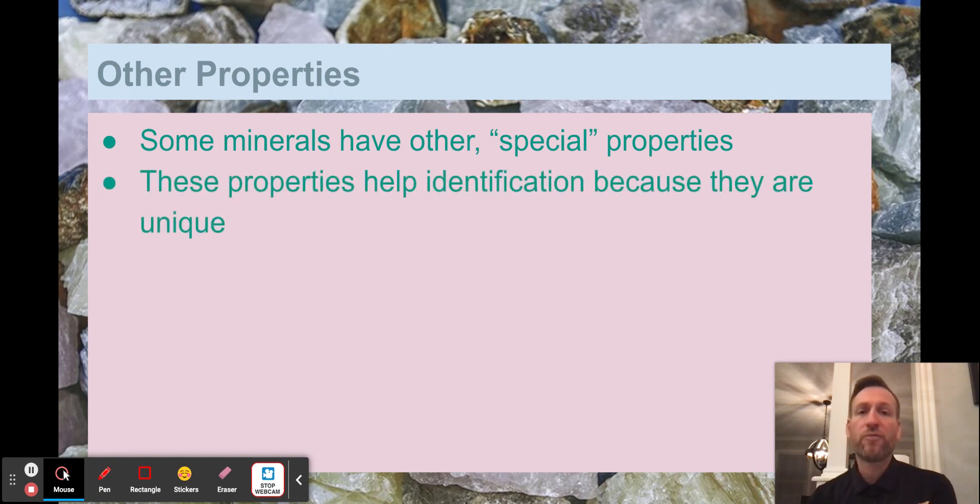All right. So some minerals, not all, but some have these other special properties like I was just mentioning. Properties are unique. And they really help in identification because of how unique they are. Not many of these minerals have these characteristics. And so when they do have them, it makes it pretty obvious in terms of identification. So let's just go through some of the examples. These are not all of them, but these are some of them.